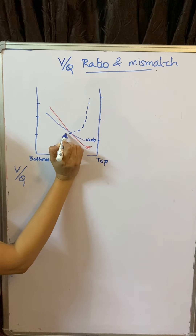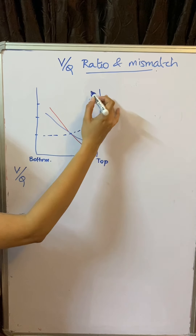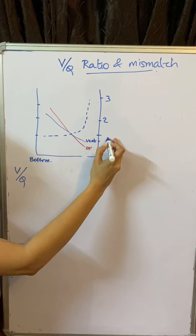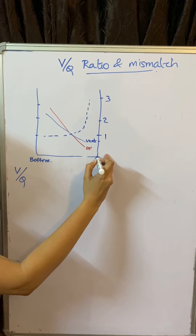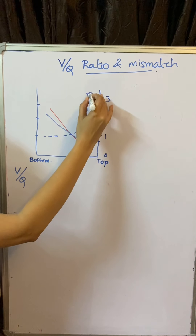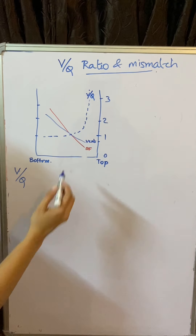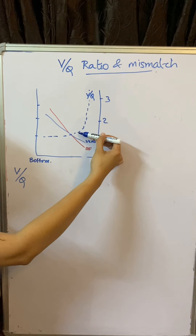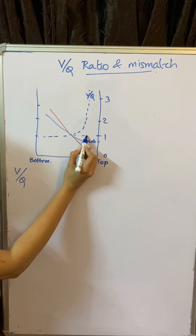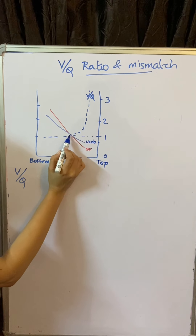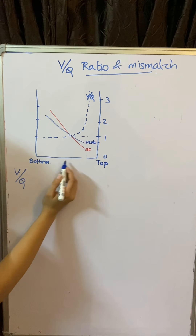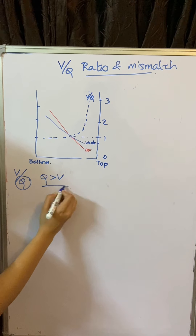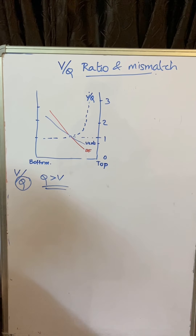As we move from top to bottom, ventilation is showing an upward curve, which means it is showing an increasing value. And perfusion, that is blood flow, is also showing an upward curve. But blood flow has overtaken and reached ahead of ventilation. So as we come down the lung, ventilation and perfusion both increase but perfusion increases more than ventilation. As a result, the ventilation perfusion ratio decreases as we move down from the apex to the base of the lung.